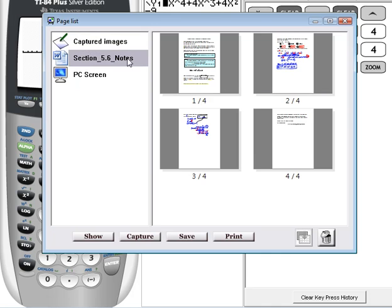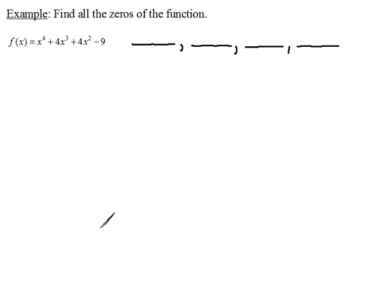Let's go back to our screen here. If we think that negative 3 is a zero, we can find that out very quickly and easily. And I'll show you how to do that and the way that's the most beneficial to you. I would do synthetic division with this problem.